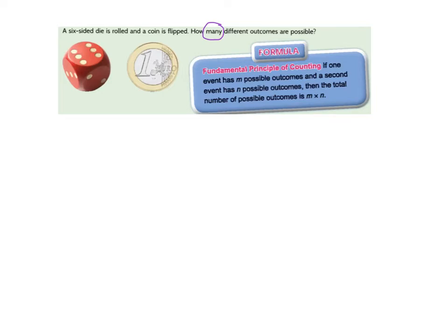The fundamental principle of counting states that if one event has m possibilities, and the second event has n possibilities, then the total number of outcomes is m multiplied by n. So the events we're talking about in this case are rolling of the die, which I can label m, and flipping of the coin, which I can label n.